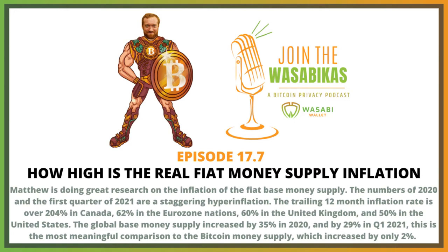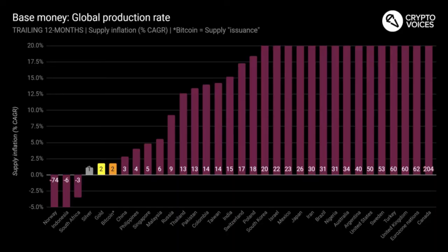The money printing is continuing consistently. Pulling up my latest thread — it's pinned to my profile, crypto underscore voices on Twitter. Tweet 29 shows the trailing 12-month inflation rate of each nation's money supply. The eurozone nations are one group — 19 countries. You'll see Canada at 204% in the last year, 62% for the euro.